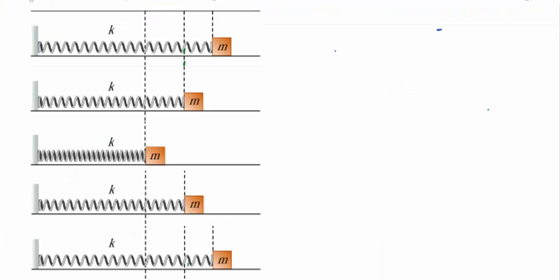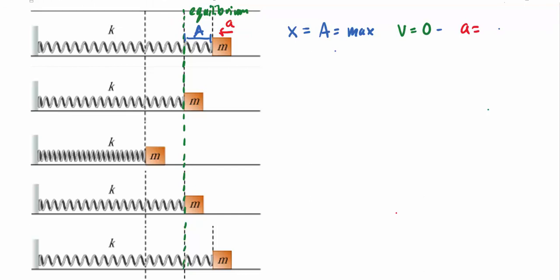Let's set up the picture. The green line represents our equilibrium position — that's where the mass is trying to return to at all times. We pull the mass to the side by a distance called 'a', the amplitude, and release it. At that point, the position equals 'a' — a maximum. Because we released it from rest, the velocity is zero, but the acceleration is at a maximum — directed back in the negative direction, so it's a negative maximum.